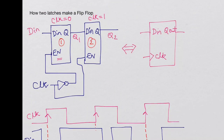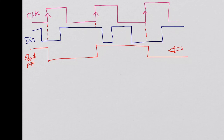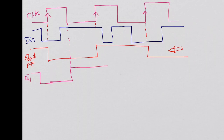Q1 is the output of the first latch, which is enabled when the clock is low — it passes data when the clock is low. So when the clock is low, Q1 follows DN. DN goes low, and Q1 keeps that low value; then it goes high and stays high. Then it stays low and goes high again at the falling edge of the clock. So this is Q1.